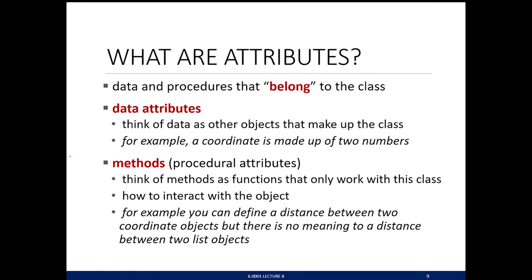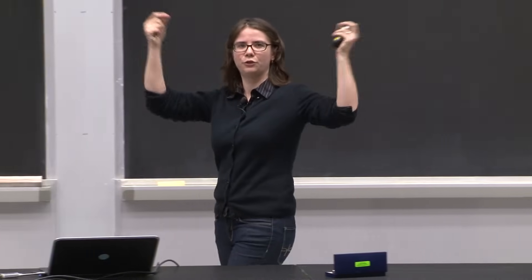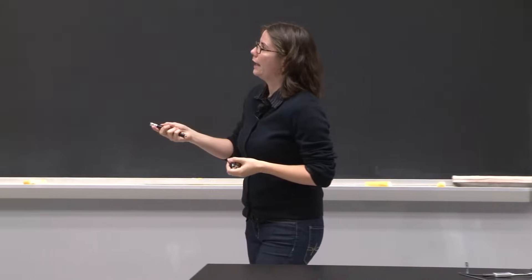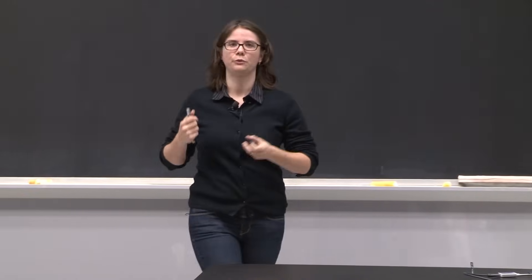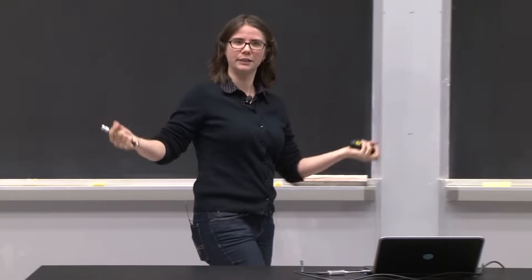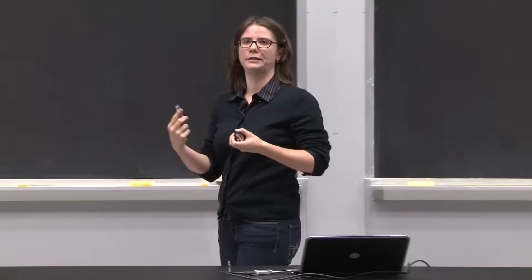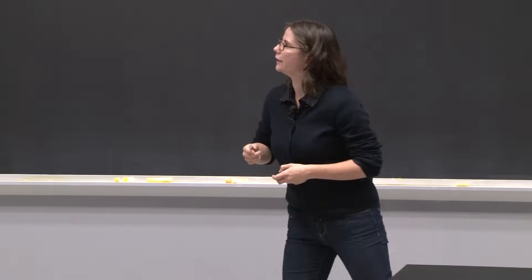So the methods define how you can interact with the object. For a list, you can append an item to the end, sort a list, things like that. When you're defining methods, you're defining ways that people can interact with your object. For a coordinate object, for example, we can say we can take the distance between two coordinate points. And just to be clear, these methods belong to this class — if you try to use the distance method on two lists, you'll get an error, because this distance method was only defined to work with two coordinate type objects.